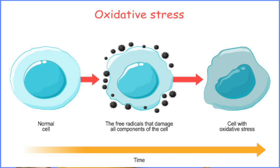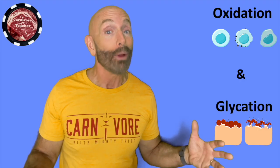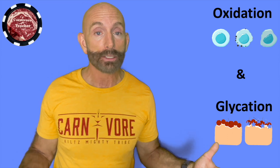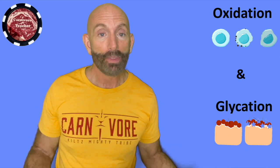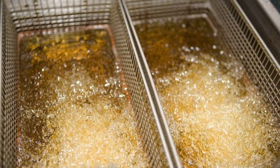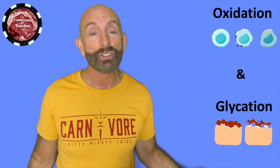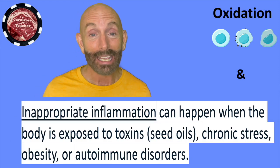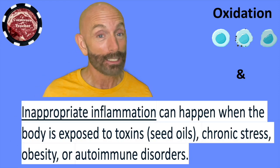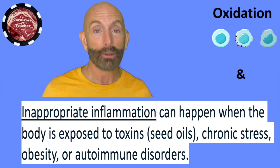Oxidation happens when we're eating seed oils. They're already oxidized because of the way they were extracted through extremely high heat. But then when they get put into vats and you're frying food with them, they're heating that up even more — it's oxidizing even worse. Then you're eating that fried food and the heat in your body oxidizes it even worse. Oxidative stress generates inappropriate inflammation in the body.